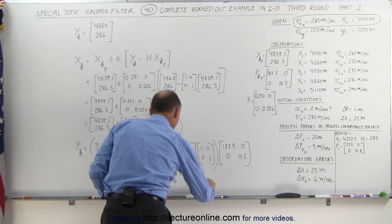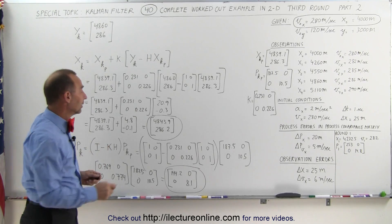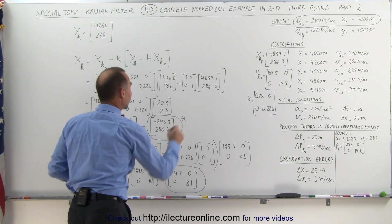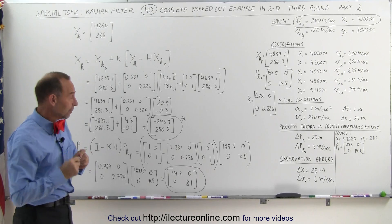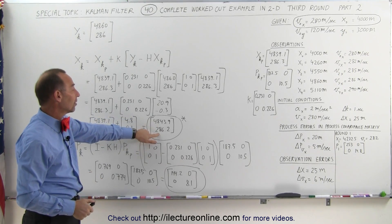And this is the new process covariance matrix to be used in the next round, round 4. We don't need that here. This is the key. After three rounds, we've established using the Kalman gain that our position is 4843.9 and velocity is 286.2.